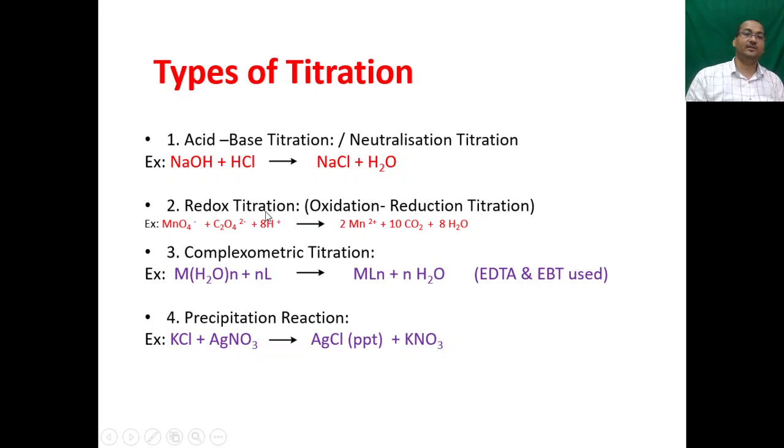Next is redox titration, where one is oxidized and the other is reduced. In this example, MnO4-, manganese is in +7 oxidation state, which is reduced to +2 state, and oxalate is oxidized to CO2.